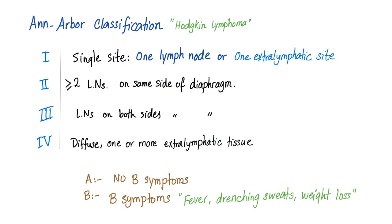The Ann Arbor classification: Stage 1 is a single site. Stage 2 is two or more lymph nodes on the same side of the diaphragm. Stage 3 is lymph nodes on both sides of the diaphragm. Stage 4 is diffuse or disseminated disease with one or more extra-lymphatic tissues involved — such as the liver. Each stage can be A (no B symptoms) or B, where B symptoms include fever, night sweats, and weight loss.